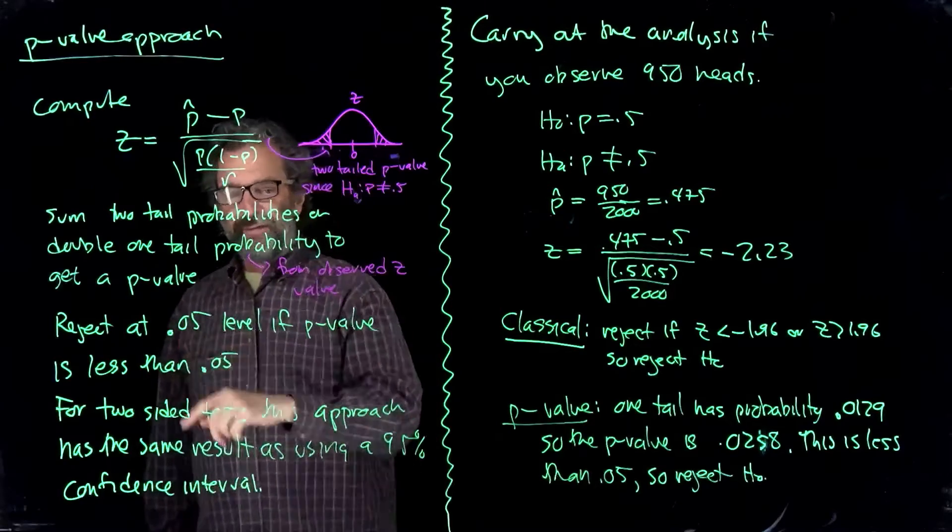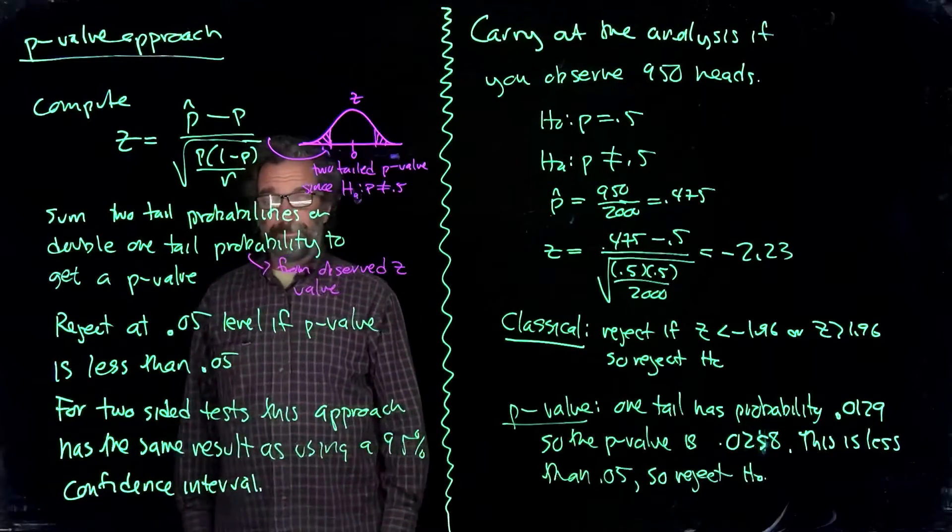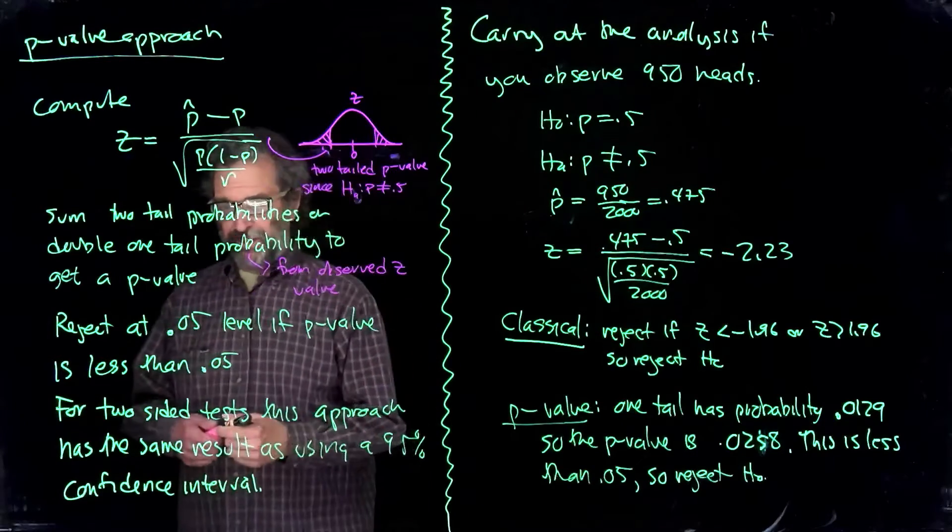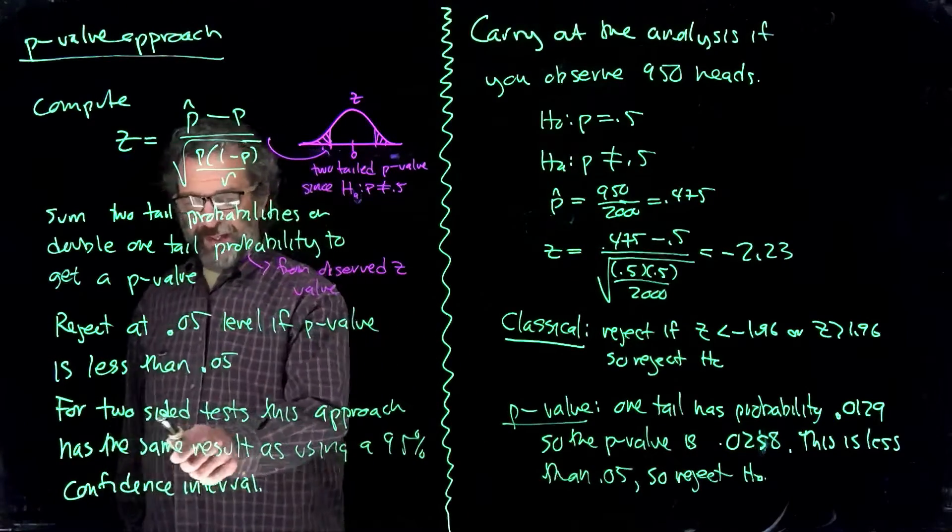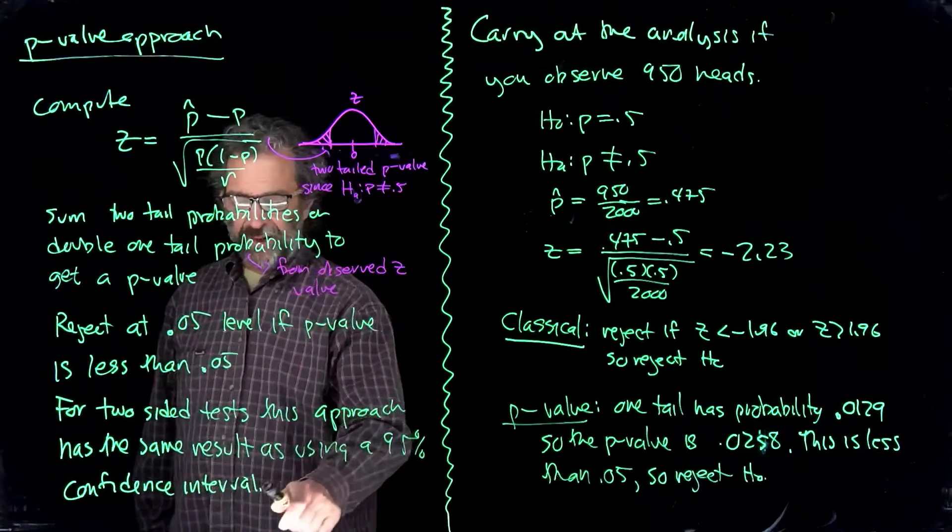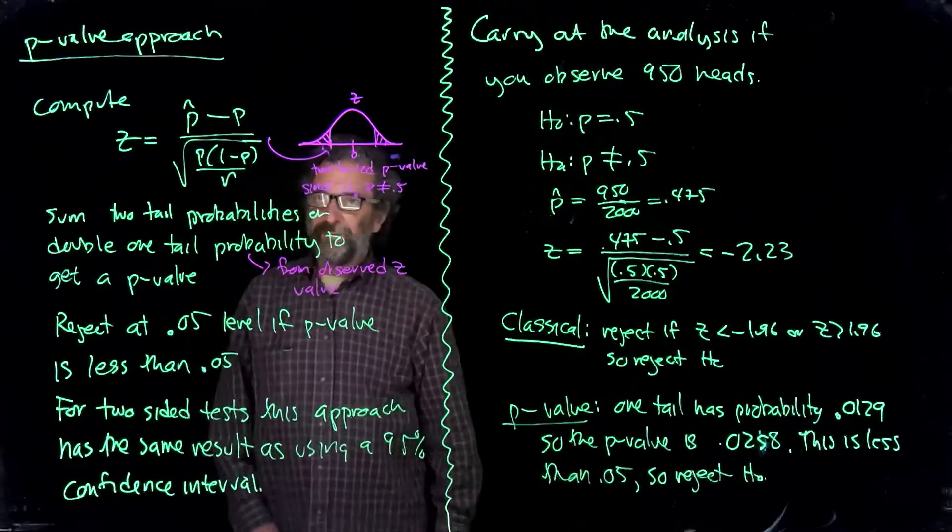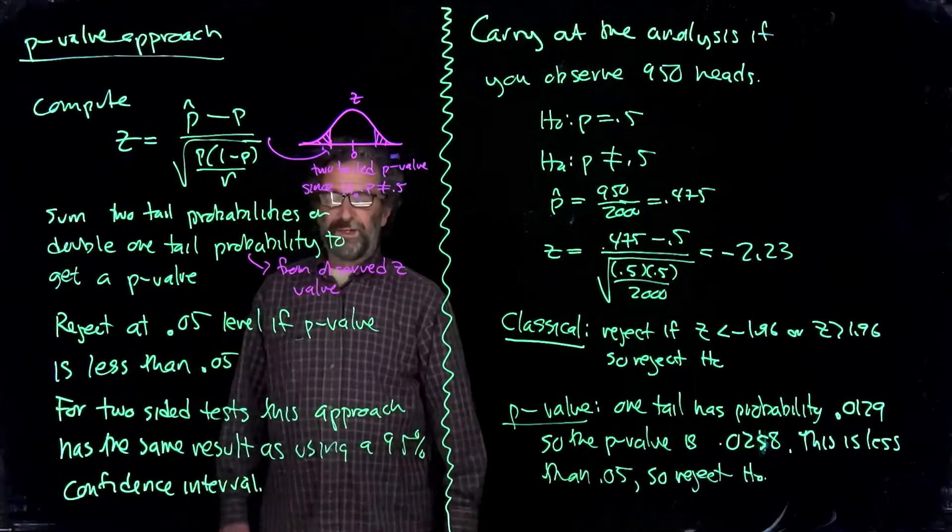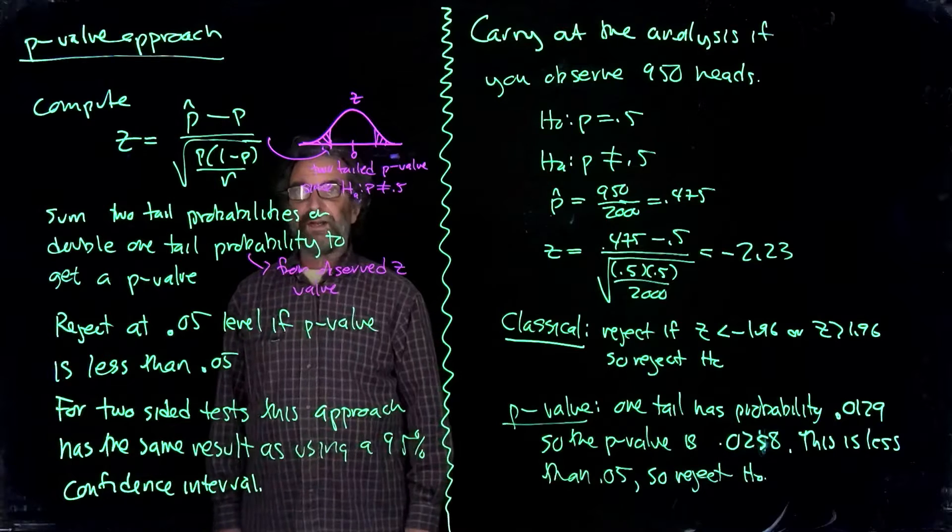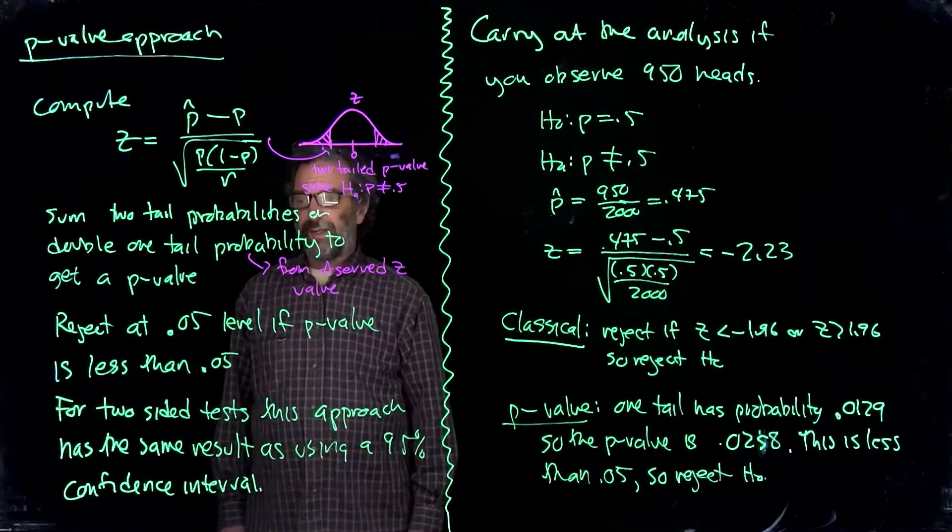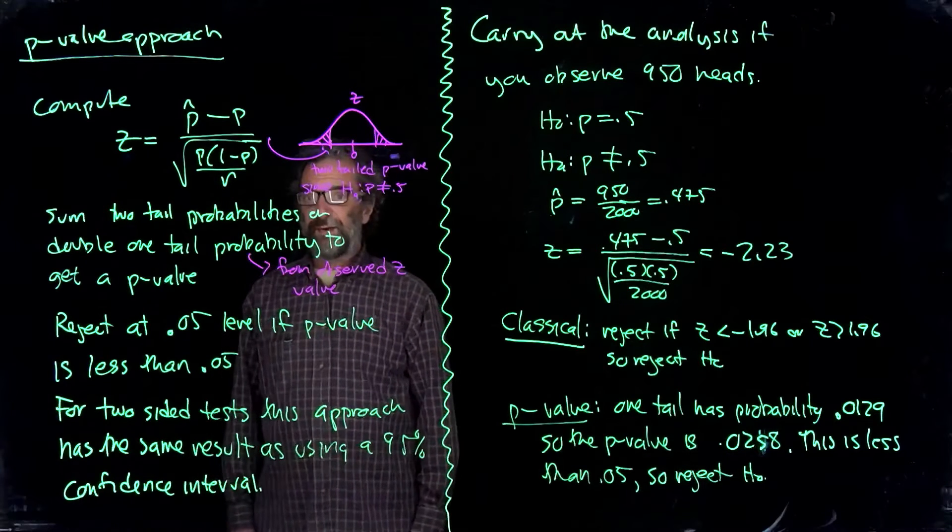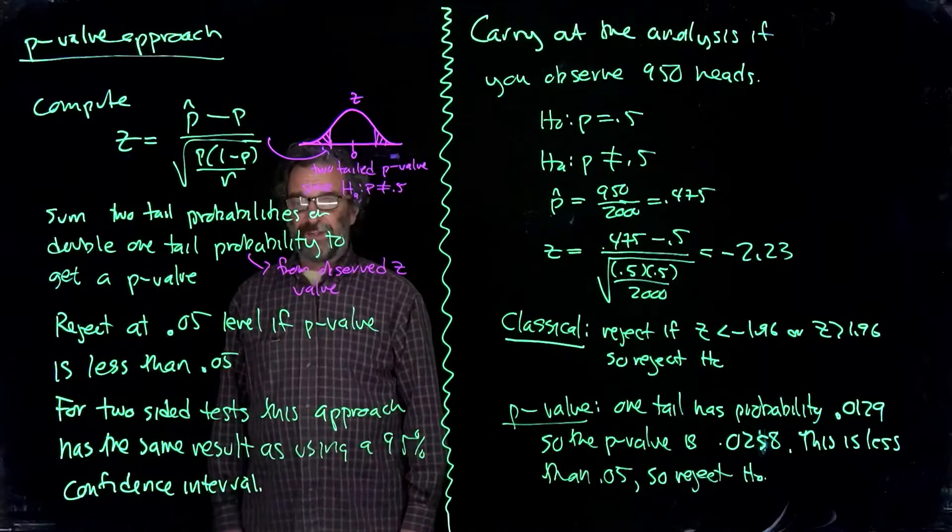Reject at the 0.05 level if the p-value is less than 0.05. True or no? And there's a little bit of an aside here. For two-sided tests, this approach has the same result as using a 95% confidence interval. So we said one way to tell if a given parameter value is legitimate is to create a 95% confidence interval based on the data. And if the parameter falls in the interval, since the interval is about the parameter value, then that parameter value would be consistent with the data.